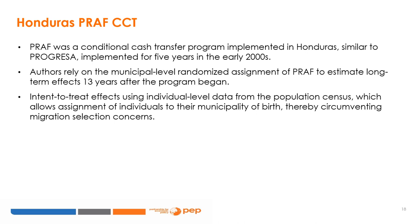The authors rely on municipal-level randomized assignment of the program to estimate the long-term effect 13 years after the program began. They used census data from later years, identifying where adults in the census were born to see whether they were from municipalities that had or didn't have the program. These are intent-to-treat effects computed at an individual level from the census, which allows assignment of individuals to their municipality of birth, thereby circumventing migration selection concerns.